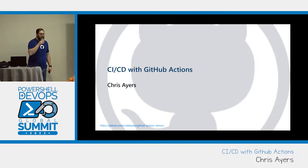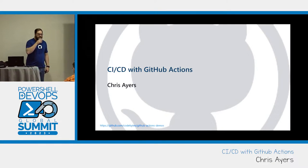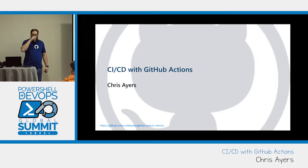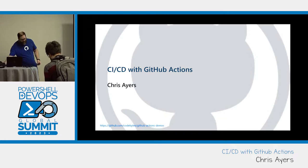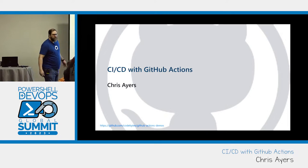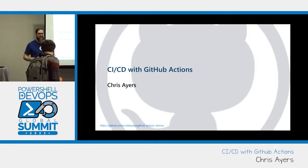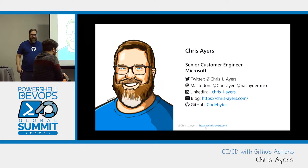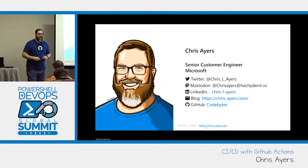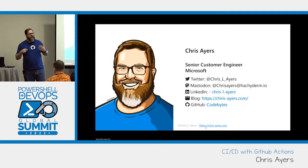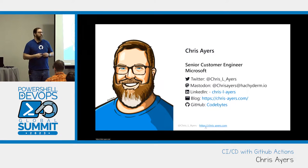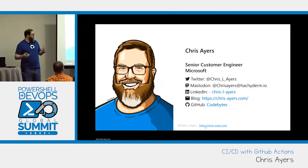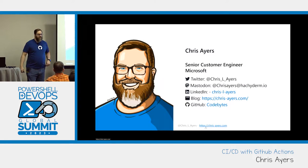We got 45 minutes. It's nine o'clock. Let's get started. We're going to talk about CI/CD with GitHub Actions today. My name is Chris Ayers. I am a senior customer engineer at Microsoft. I'm part of the Azure engineering team. We have a group there under Scott Guthrie called CXP, Customer Experience, and I'm part of that in a team called Fast Track for Azure.